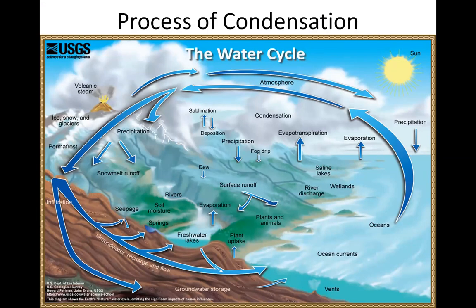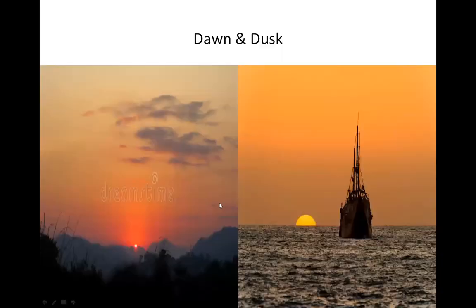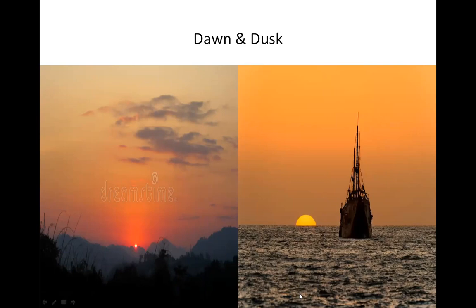Most dust particles are seen in the atmosphere and the spreading of sun rays is visible due to these particles. It is due to dust particles that it does not suddenly turn dark after sunset and does not suddenly turn bright after sunrise. The sun rays are reflected back with the help of these dust particles on the surface of the earth, and we are able to listen to sound due to the presence of the atmosphere.